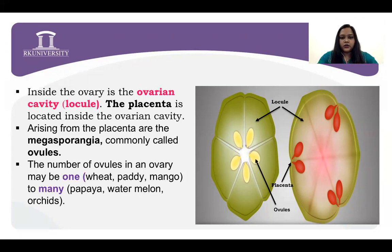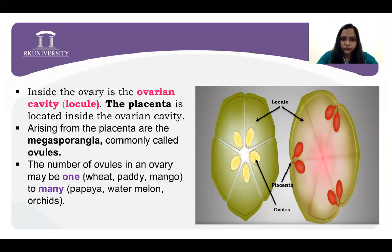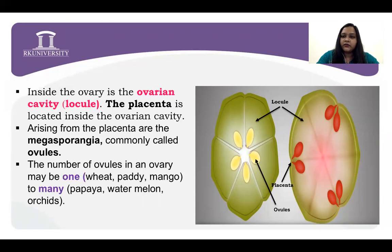So now we can say — do you understand what locule is, what ovule is, and what placentation is? Maybe you get confused between locule and ovule. Locule is basically a cavity which has the placenta from which the megasporangium is attached and will mature.